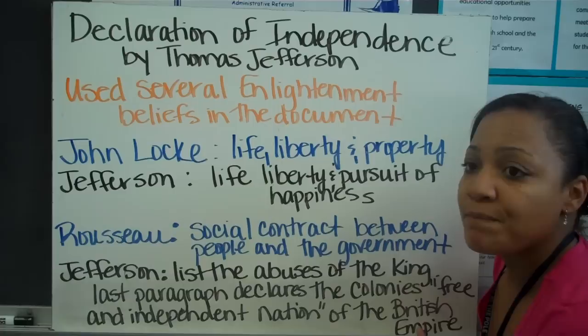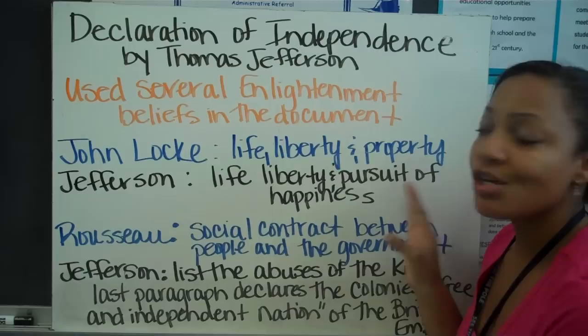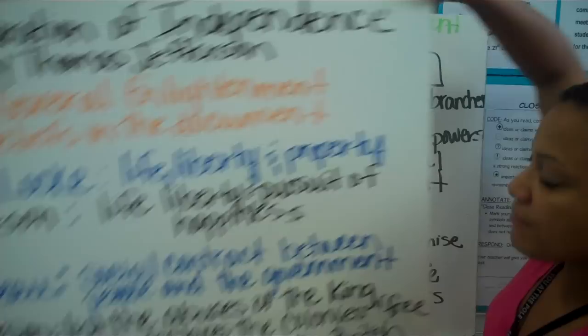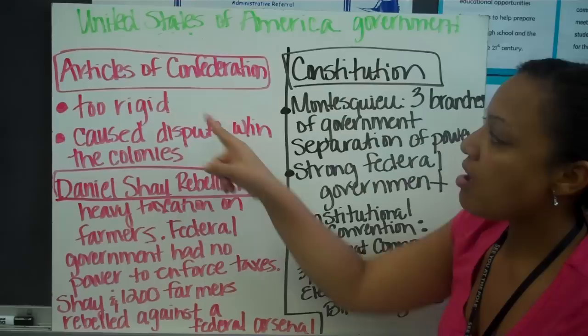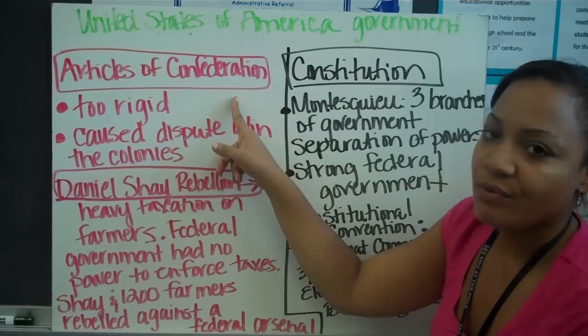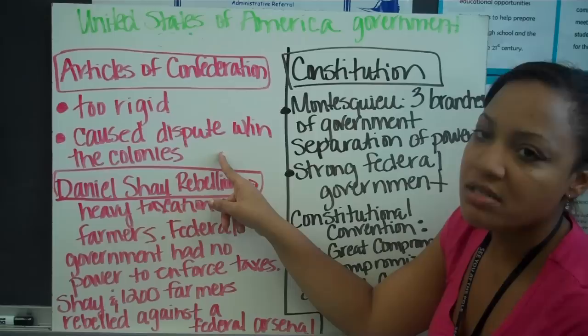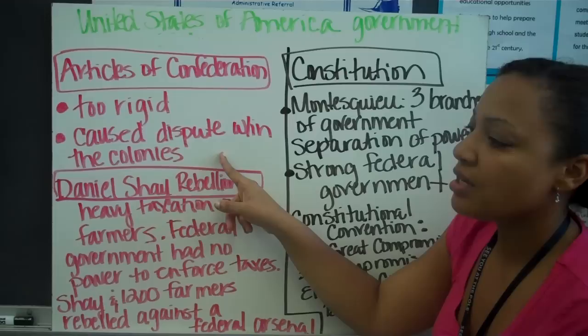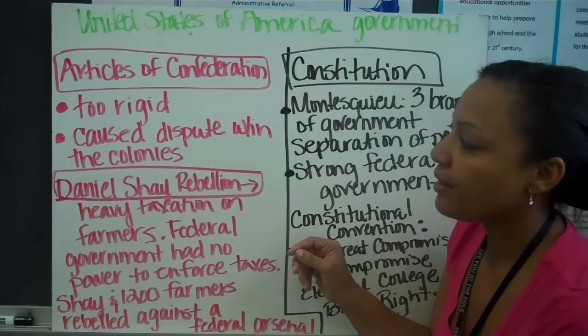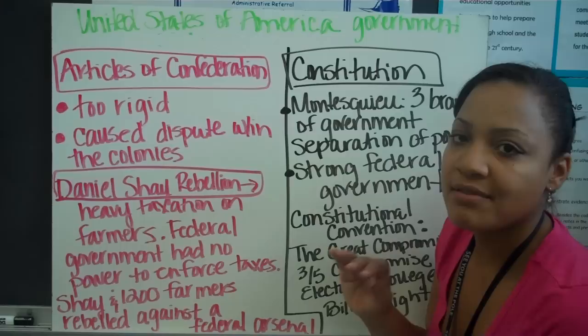Just because the Declaration of Independence was written didn't mean they were automatically independent — they had to go to war with England. In the end, they won the war and formed their own government. Their first form of government was called the Articles of Confederation. The problem was it was too rigid and hard to change. It caused disputes because each colony governed itself individually, not as a whole like the United States does today.